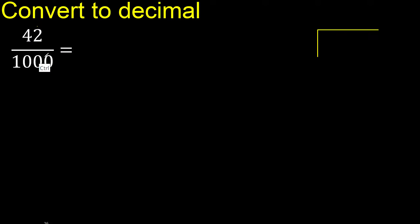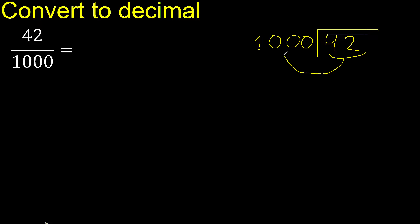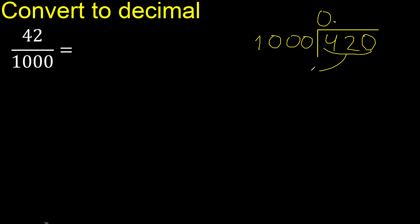42 divided by 1000 is less, therefore complete. Always complete with 0. Here, 0 point — is less. 0. 0 point only once.